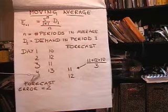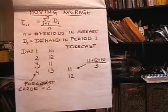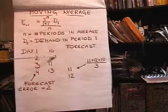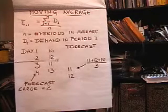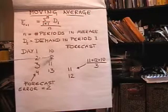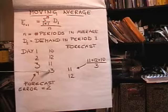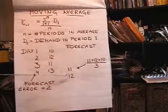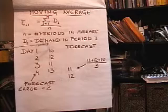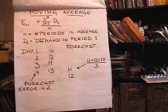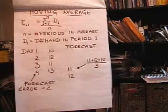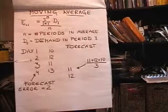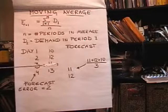If we want to forecast using the moving average method for the next period, what we do is it moves down the list, and we add 12 plus 11 plus 13 divided by 3, which is now 12. The 10 gets discarded. It's called the moving average because it moves down the list. This is probably the easiest and most common method.